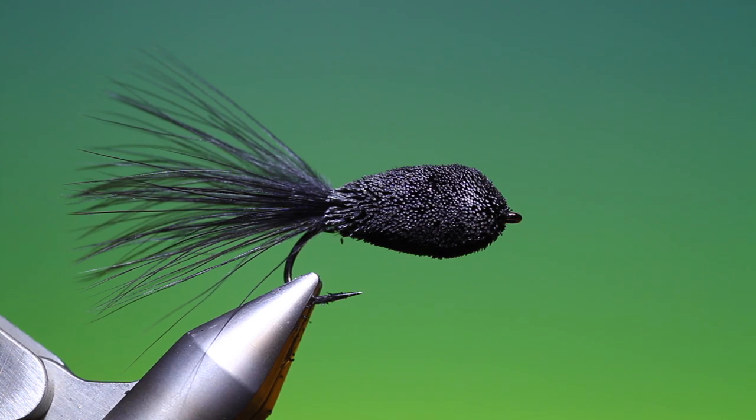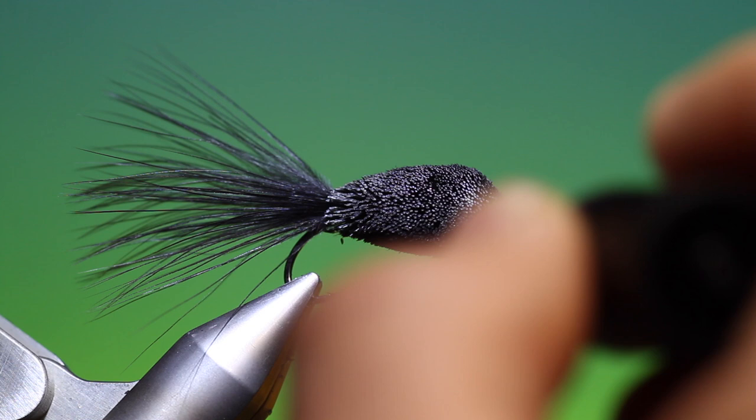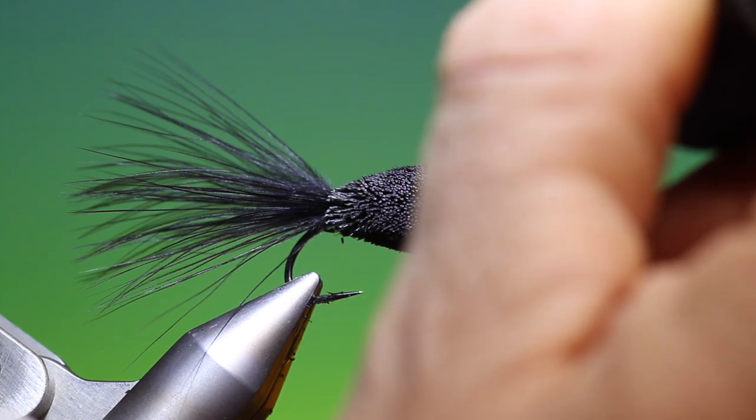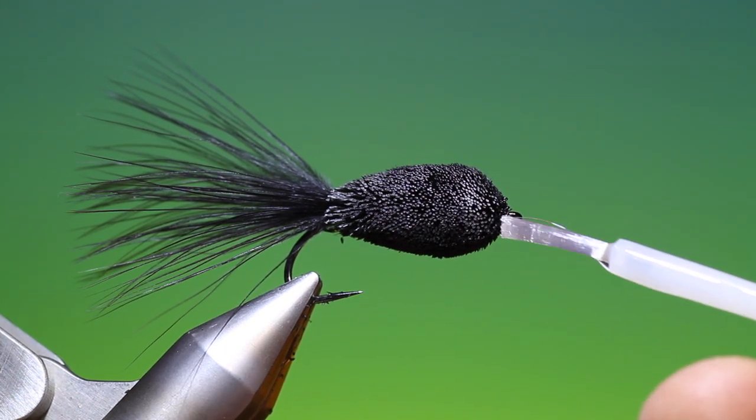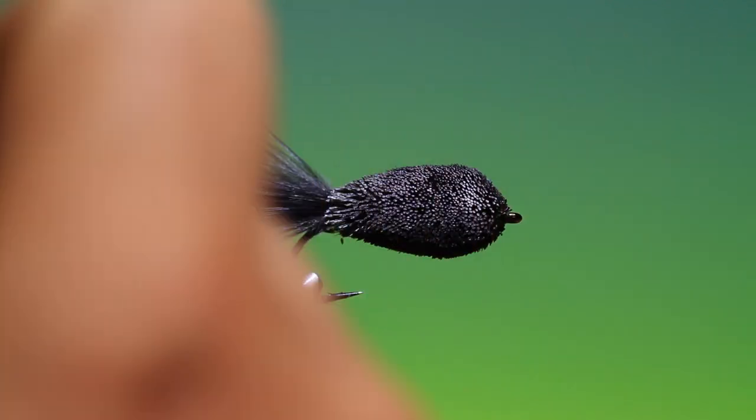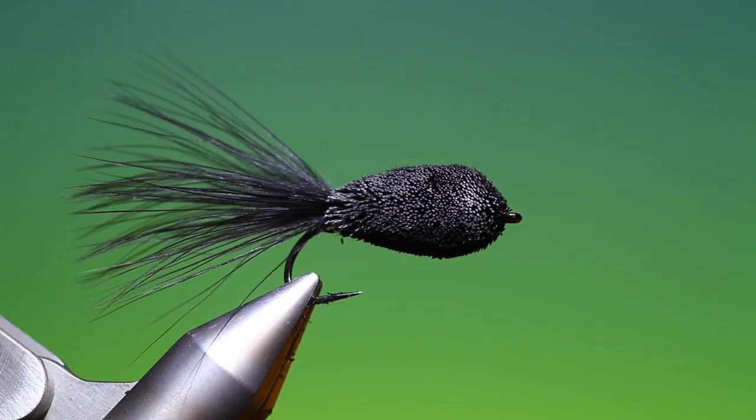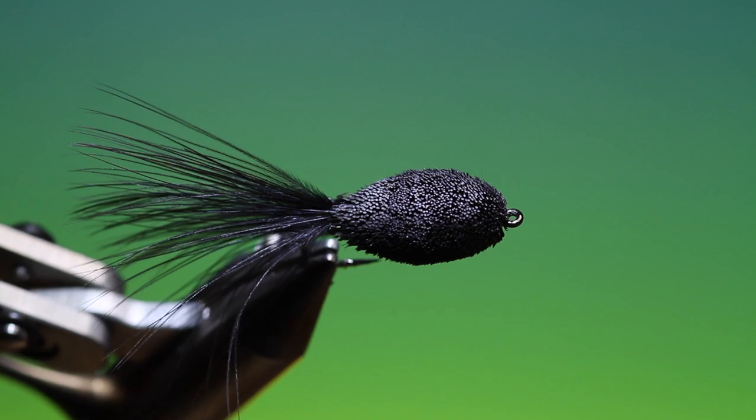All we need to do is just a drop of super glue on the whip finish. Remove any glue from the hook eye.